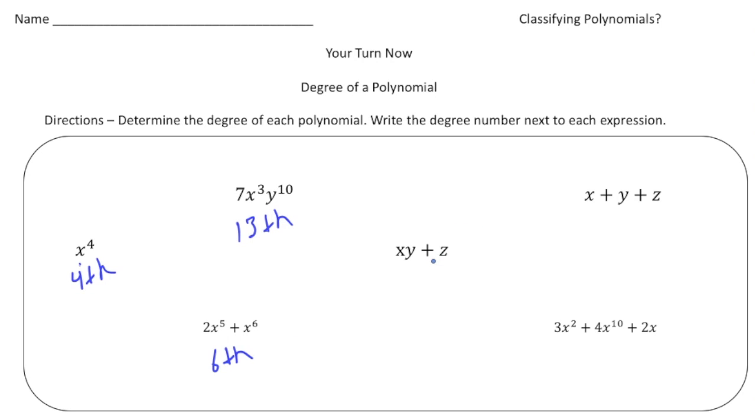Here we have a binomial also. And I'm going to put little ones above these. So this term, the xy, that would be the second degree. And the z would just be the first. So it's just going to be the second degree. That would be the degree level for the binomial.